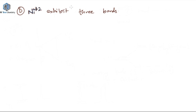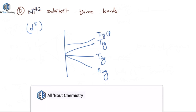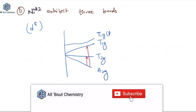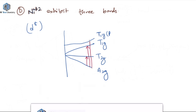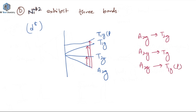Statement D says that nickel in +2 oxidation state complexes exhibit three bands. Ni²⁺ is a d8 complex, and d8 has a similar Orgel diagram to d3. The energy levels are A2g, then T2g, then T1g, and T1g(P). Just as in the chromium d3 case, there are three transitions: A2g to T2g, A2g to T1g, and A2g to T1g(P). So statement D is correct — three transitions give three bands.